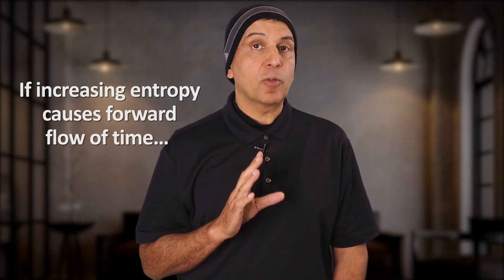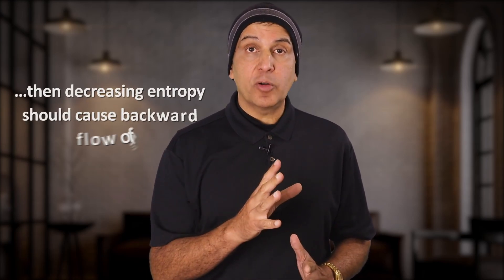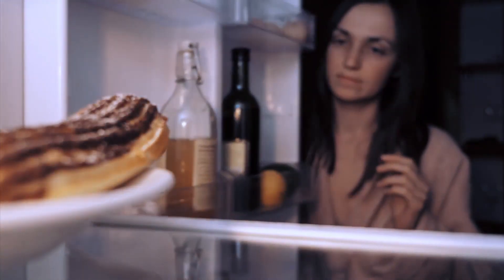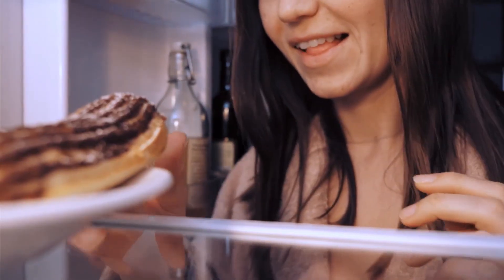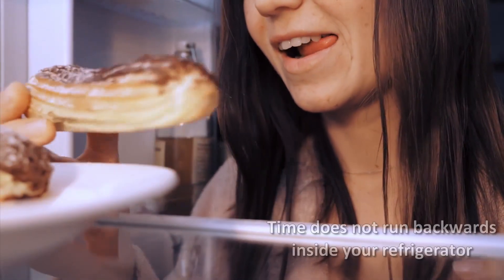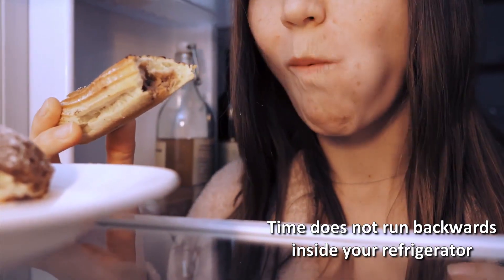If increasing entropy was directly responsible for the forward flow of time, it would be logical to presume that decreasing entropy would cause the backward flow of time. There are processes of decreasing entropy everywhere. For example, the inside of your refrigerator decreases entropy by removing heat. That is, cooling the inside.